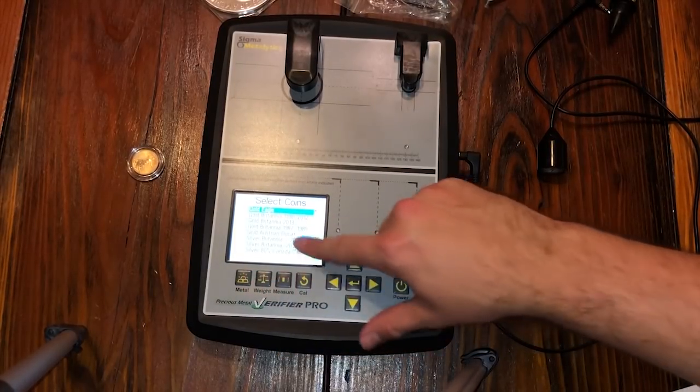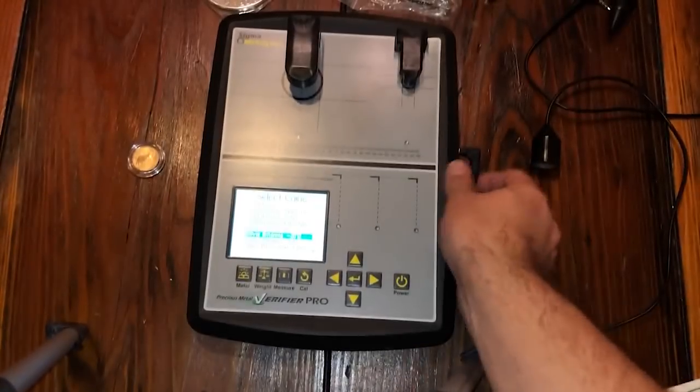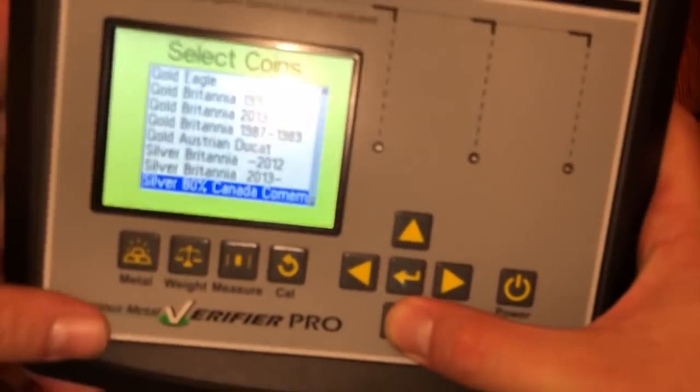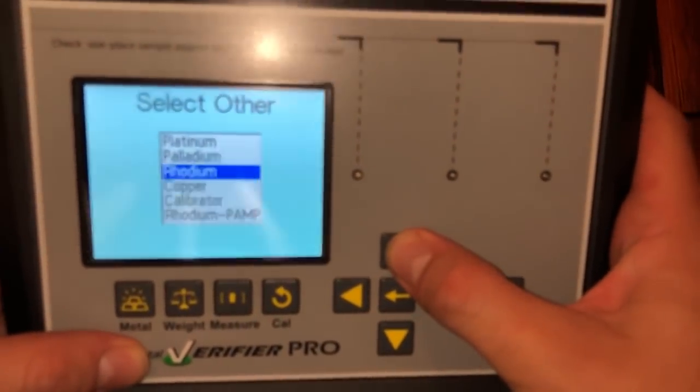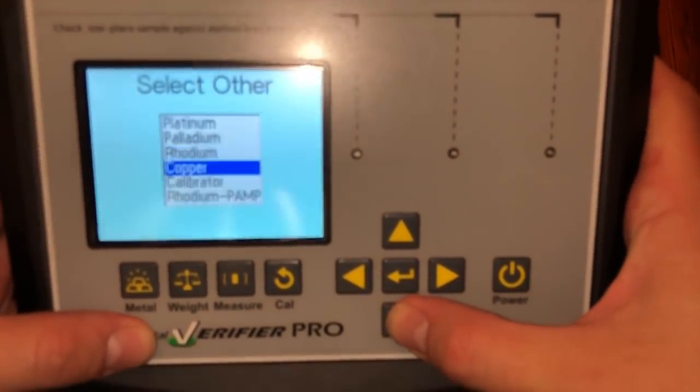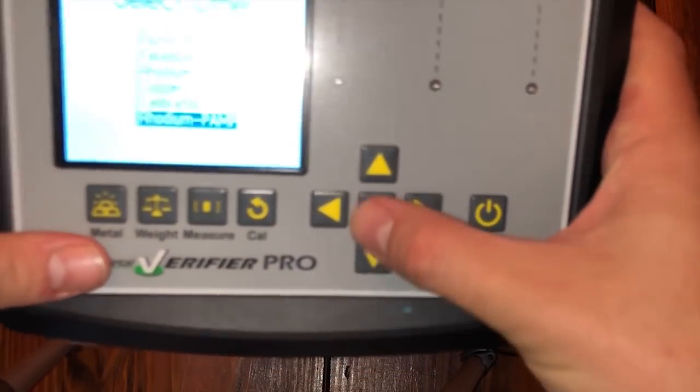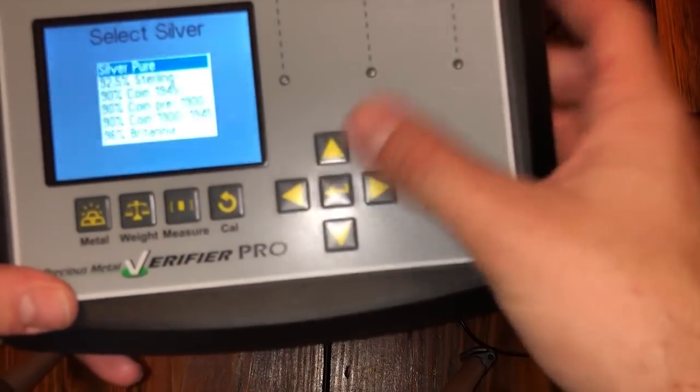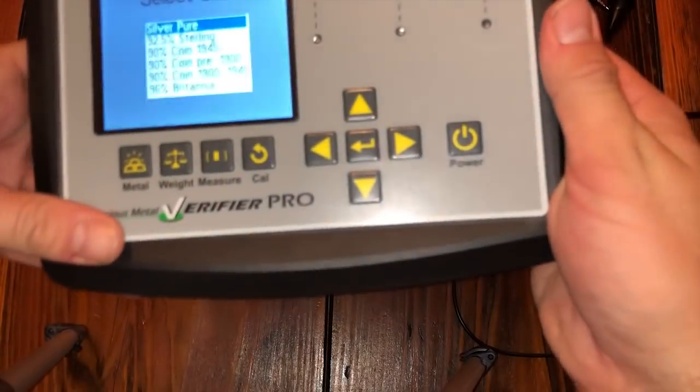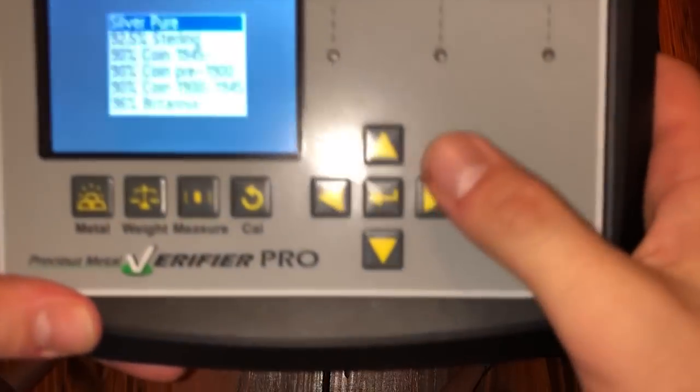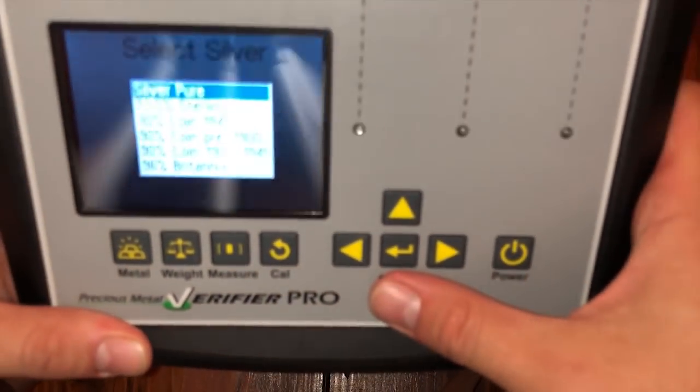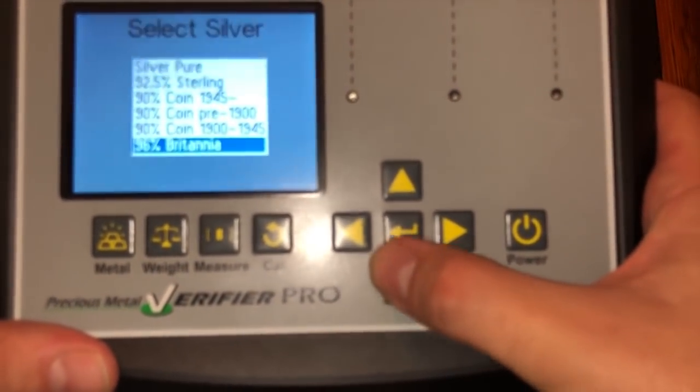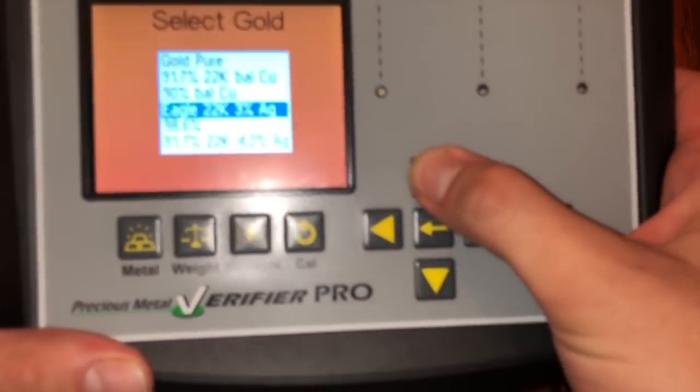On metals it has a bunch of coin presets here which is pretty cool. It does platinum, palladium, rhodium, copper - that's to calibrate it. In rhodium, pamp, pamp swiss - here's the different types. Different types of silver: silver sterling 90, britannia, pure. And here's your different types of gold.